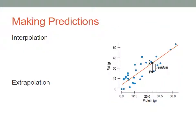We can use our equation once we get it. Remember the equation that we came up with was fat hat, sounds bizarre, fat hat equals 6.8 plus 0.97 times protein.